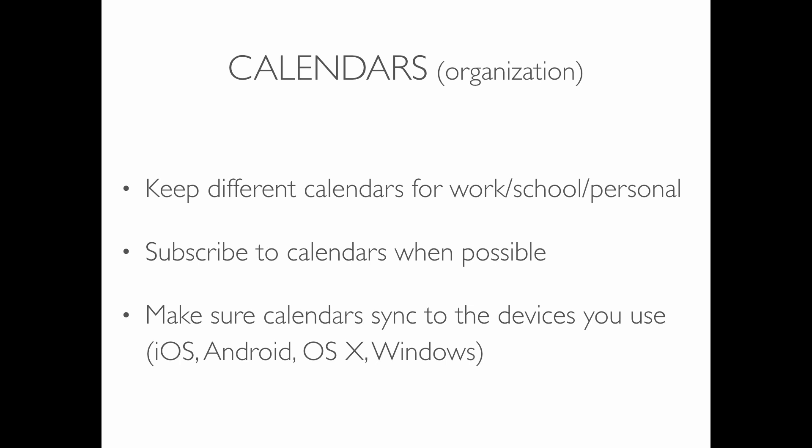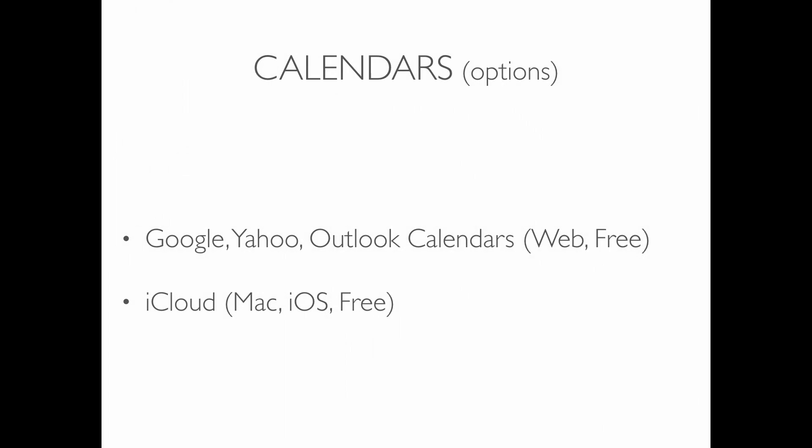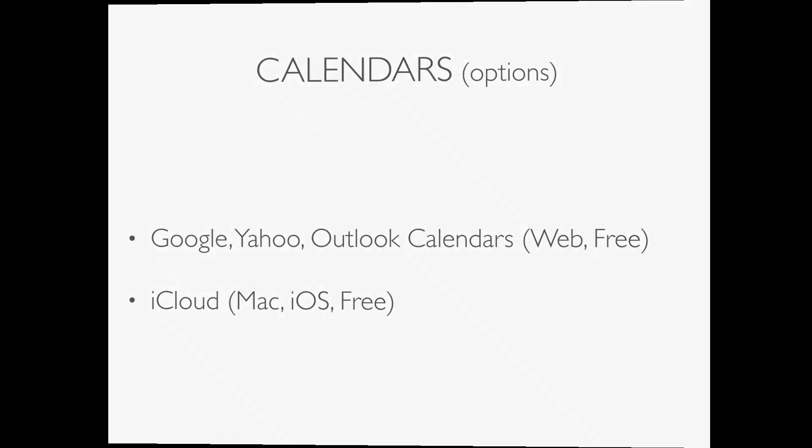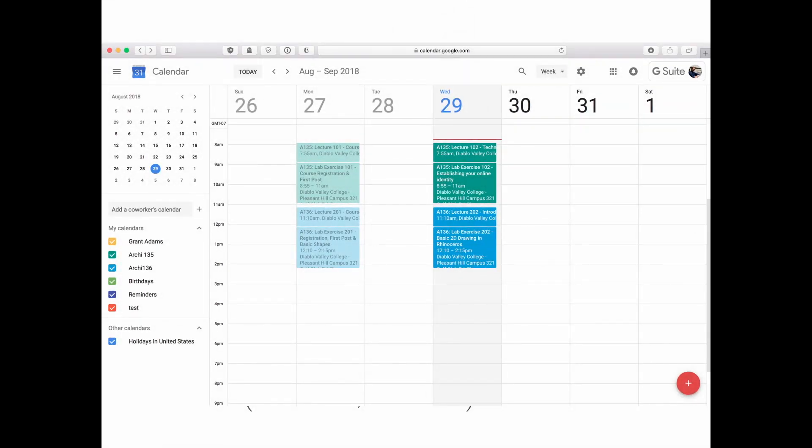Make sure the calendars sync across all the devices you use. The big players — Microsoft and Apple — have their own calendar systems that play really nice if you live within their ecosystem. If you branch across devices — say you have an iPhone but also an Android tablet — it gets a little more tricky. Google is pretty good at talking nicely to everybody. We have lots of free web options: Google, Yahoo, Outlook. iCloud is Apple's version, which is great as long as you stay within Apple.